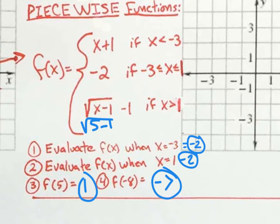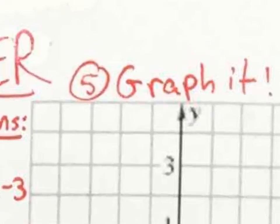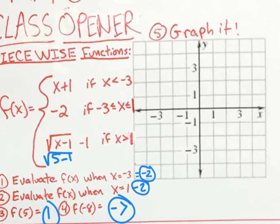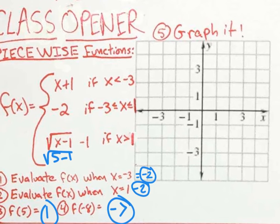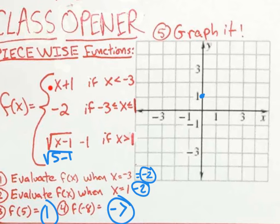The next question is to graph this piecewise function — it's really three pieces. The first piece is a line, and y equals mx plus b tells us how to graph lines easily. The b value tells you where it crosses the y-axis, so it crosses at one. I'm going to put a dot right there and use the slope, which is up one over one.